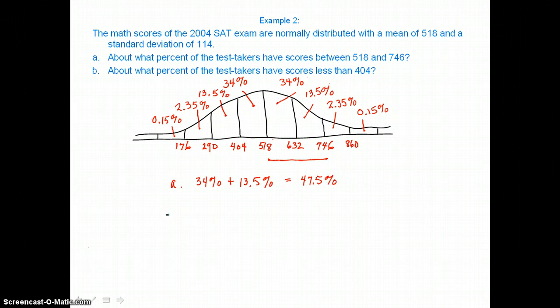In B, it says about what percent of the test takers have scores less than 404. Less than 404 now is going to include these areas. So in B, we'll be adding 13.5%, 2.35%, and that third area of 0.15%. So we'll get a total percentage here of 16%.